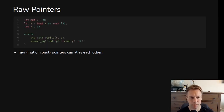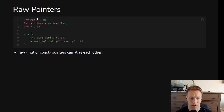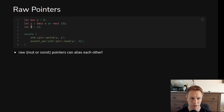We'll start by looking at raw pointers. Imagine we've got a number, i32, called x, and then we make a pointer to it. The way we make a pointer is we make a reference to x and then say as star mut i32. And this star mut i32 is a pointer to a mutable i32. So now y is a pointer to a mutable i32. We also make just an i32 called z, just a normal one, and then we do some unsafe stuff.